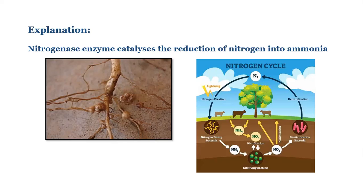Legumes are unique as they have nodules in their roots in which reside the nitrogen-fixing bacteria — the Rhizobium. There is a symbiotic relationship between the two, meaning both organisms benefit. The bacteria takes in nitrogen from the air and fixes it into a usable form for the host plant.